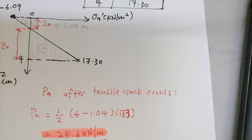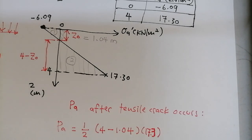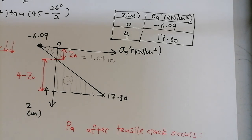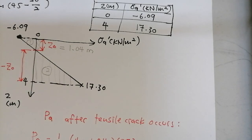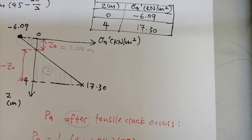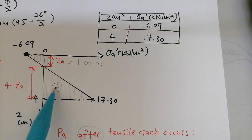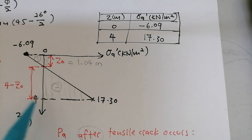With Z_note = 1.04 m, PA after tensile crack occurs = Area 2 only = ½ × (4 − 1.04) × 17.3 ≈ 25.6 kN/m. If the question also asks for PA before tensile crack, you would calculate Area 1 + Area 2. For the location of the resultant, measure one-third from the bottom of the triangle as shown in Example 1.